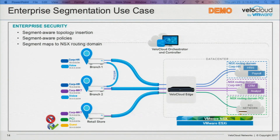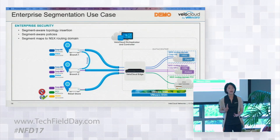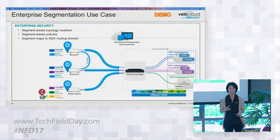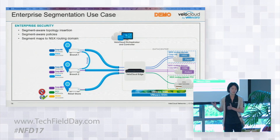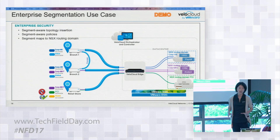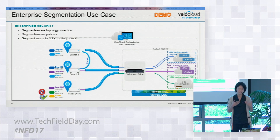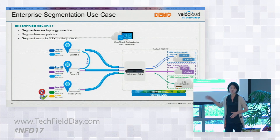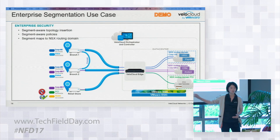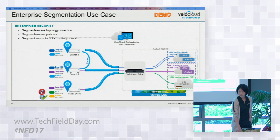We are bringing that to the segment-aware level. Next is how we map to the NSX routing domain. Assume that in a data center you have different lines of business, isolating different applications based on business lines for different departments, and you put them into different NSX routing domains. From the VeloCloud SD-WAN solution perspective, we can map our segmentation to those routing domains. So we can maintain segmentation and network isolation end-to-end from the data center all the way to the branch.